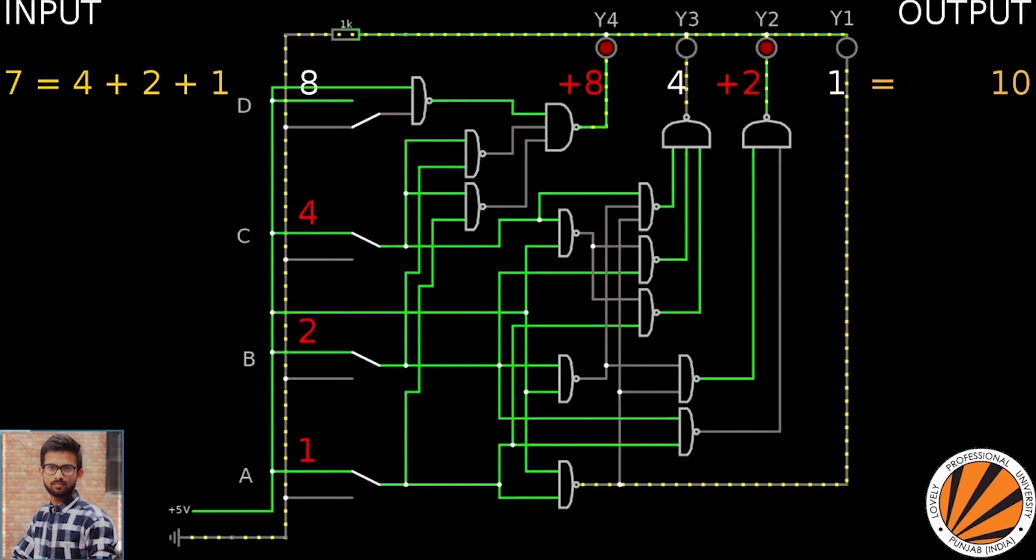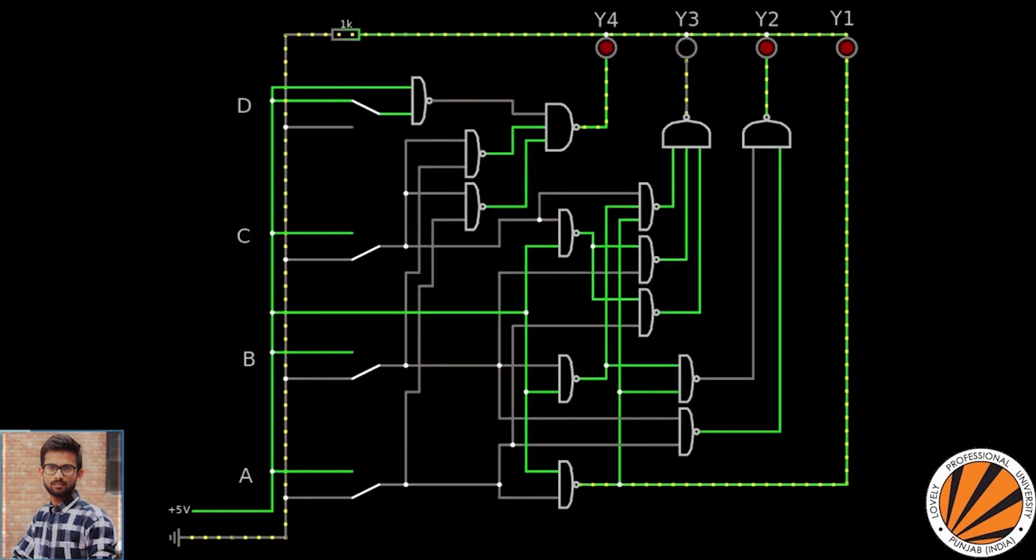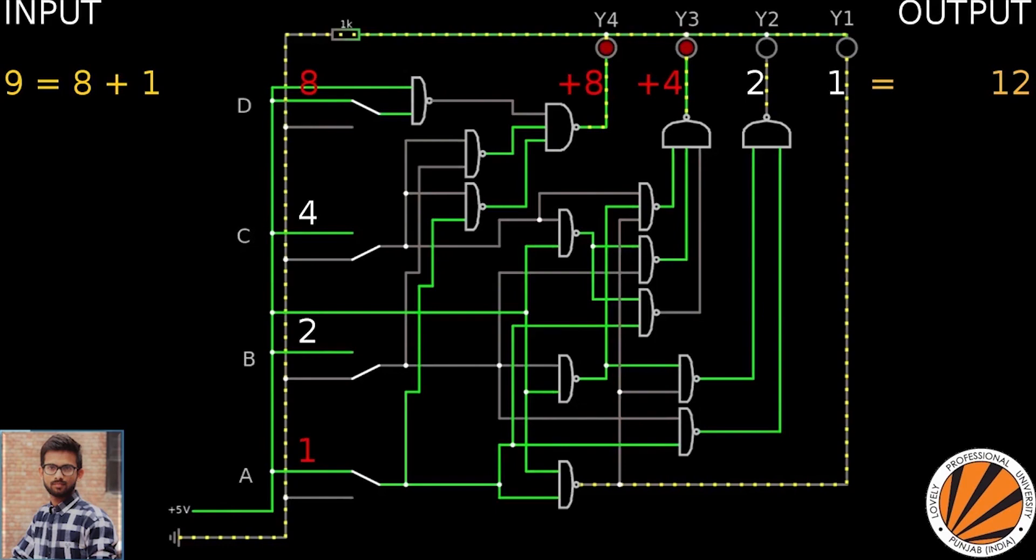7 plus 3 equals 10. This is how the BCD to Excess-3 Code Converter works. Now input is 8, and 8 plus 3 equals 11. Now input is 9, and 9 plus 3 equals 12.